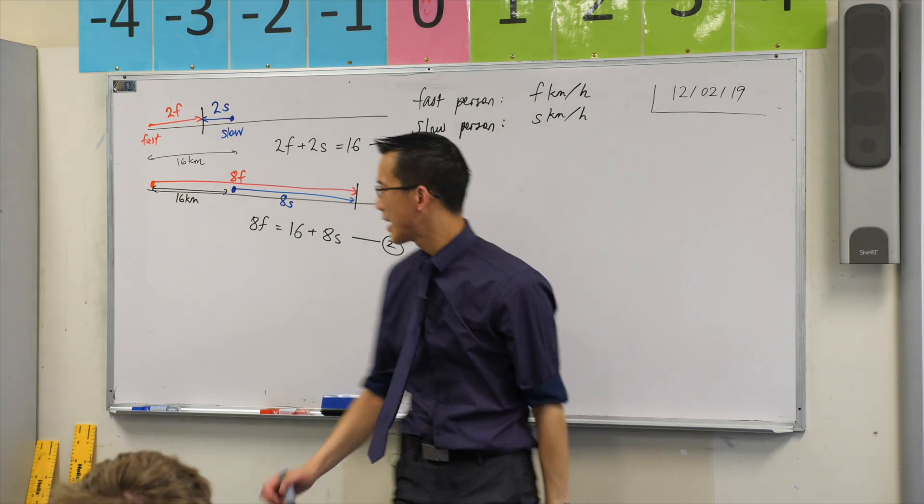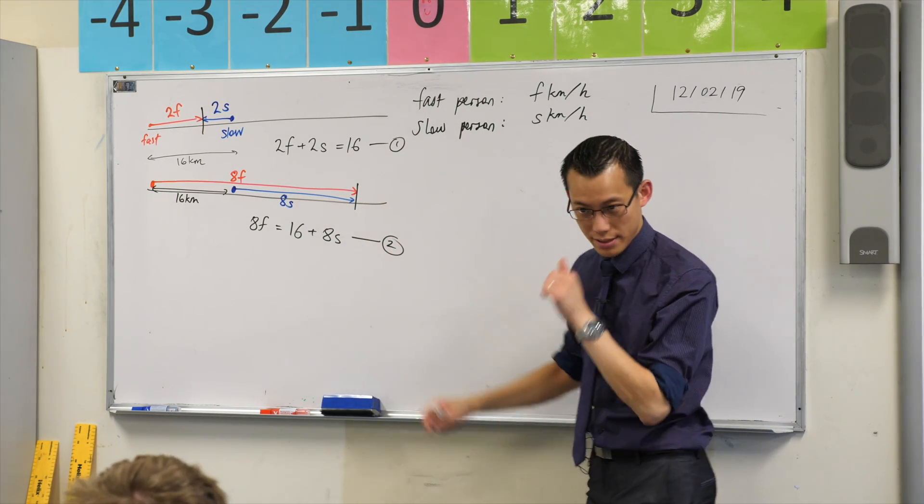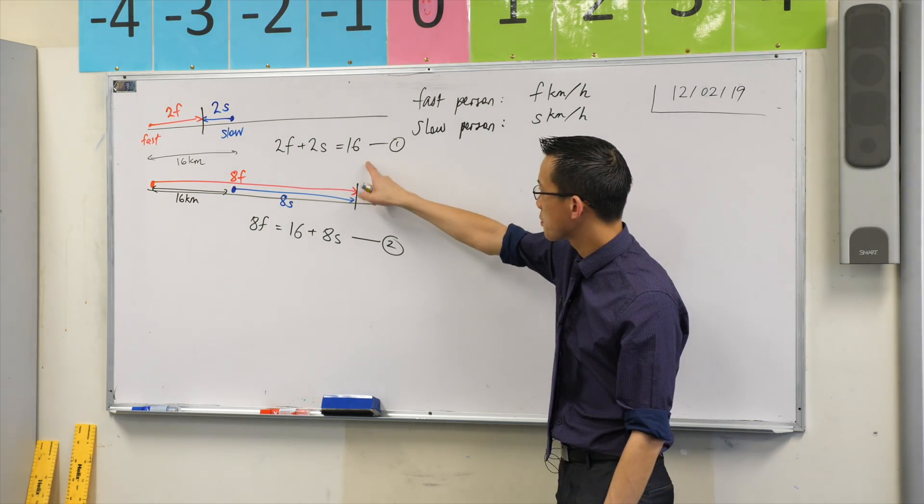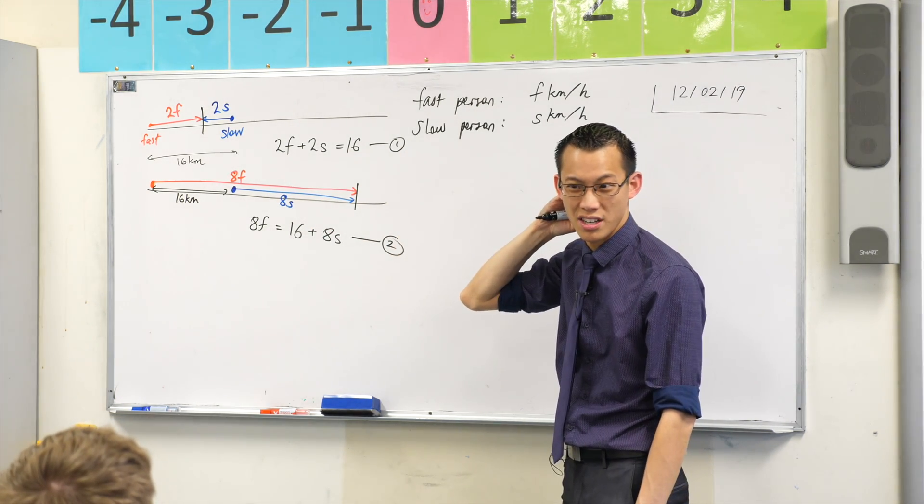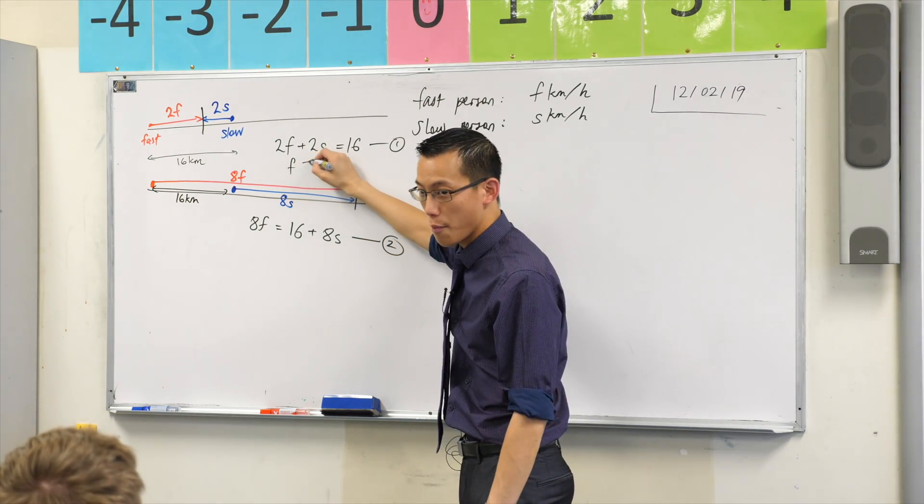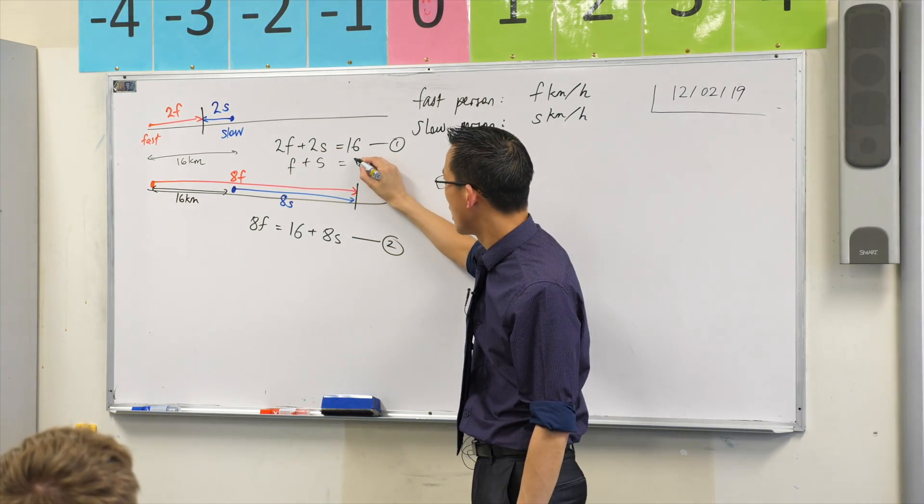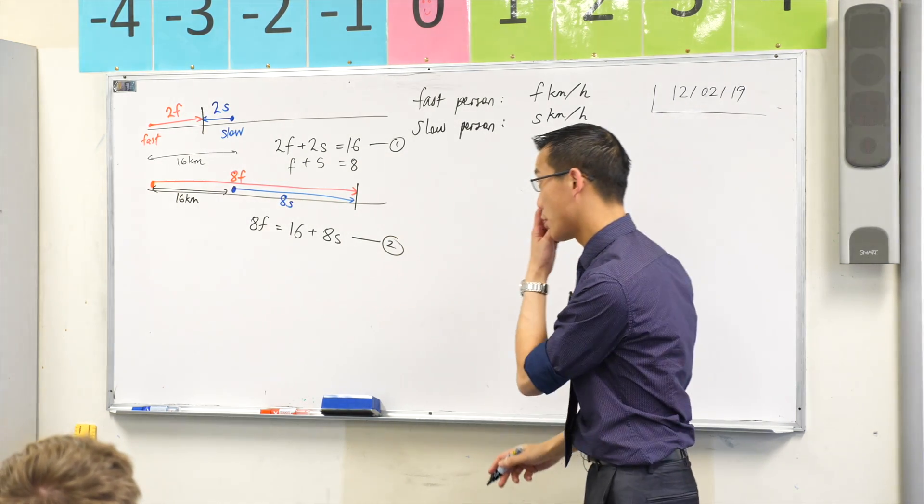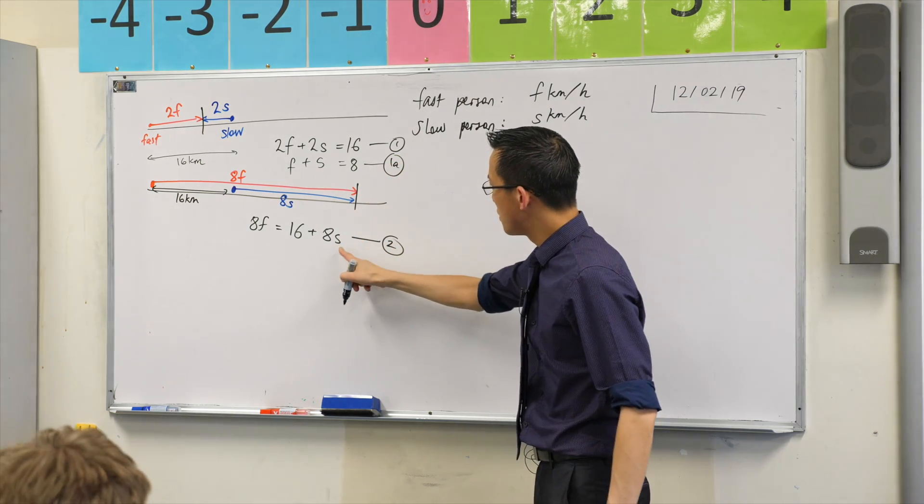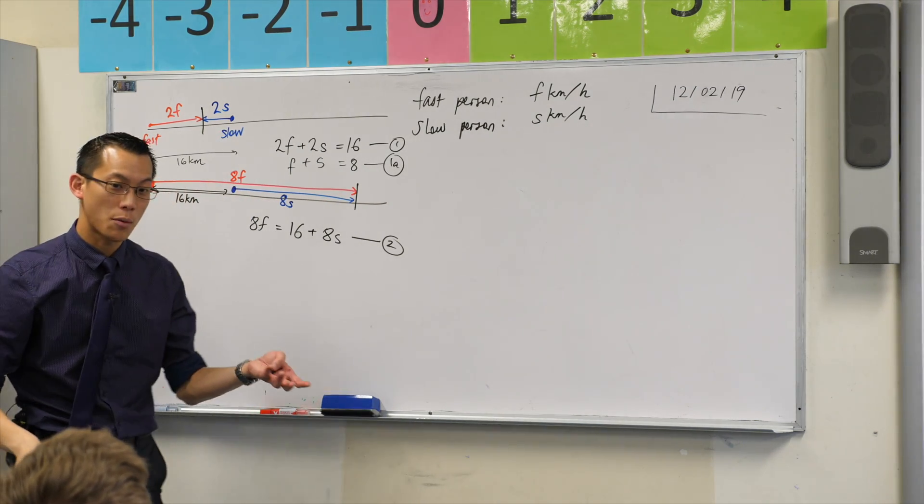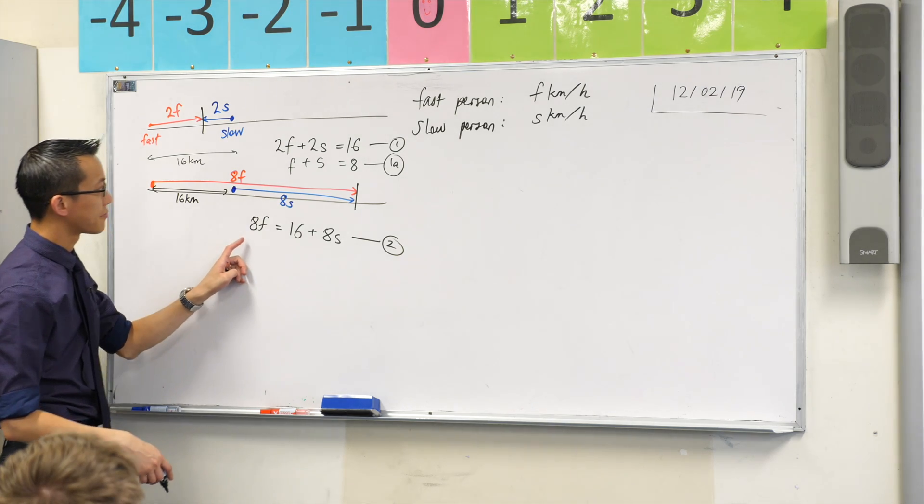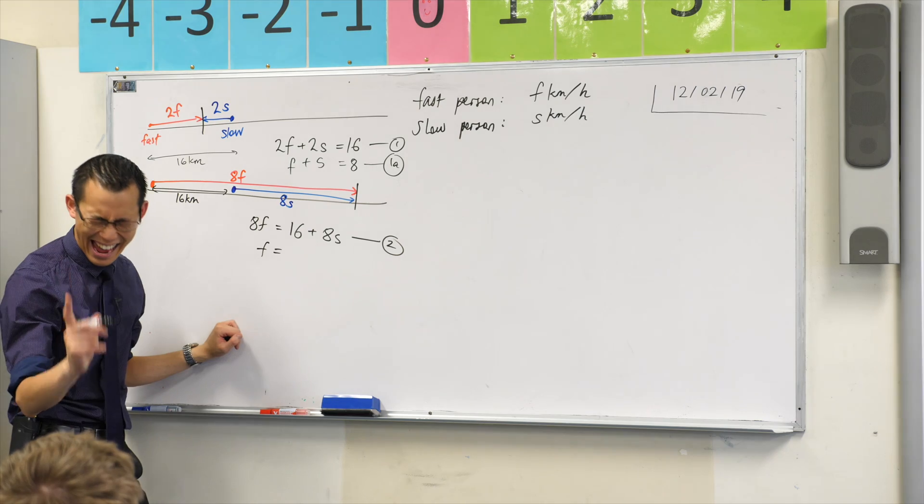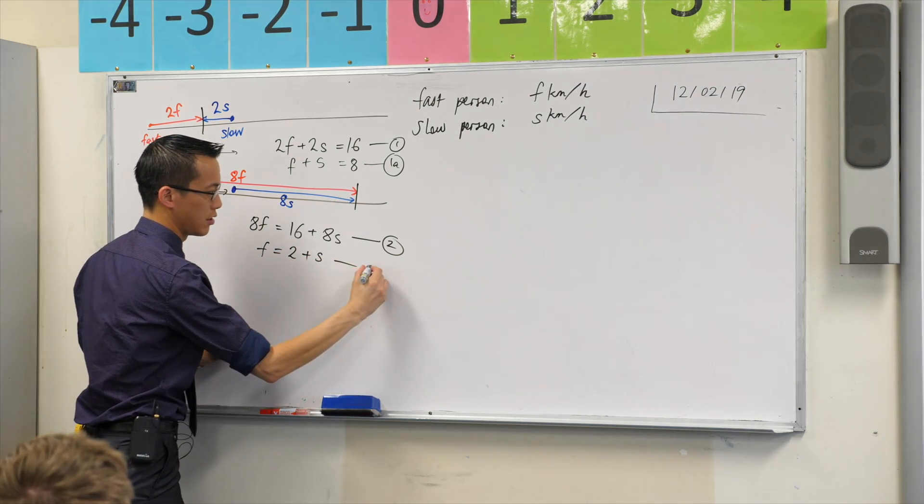Now from here I can actually make both of these equations a bit simpler. This first equation, do you see a common factor I can divide everything through by? Two. So that leaves me with f + s = 8. So I'll just call that one a. This one here, I've got a different common factor. So it would be f = 2 + s. You divided through everything by eight, which gives you the 2 plus the s. I'll call this 2a.